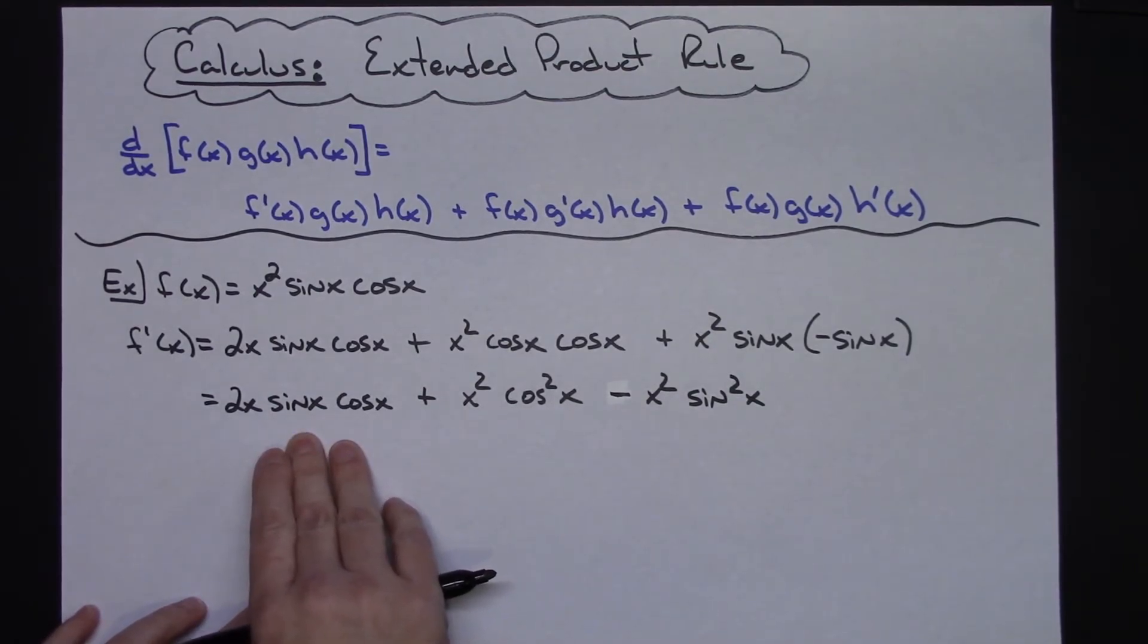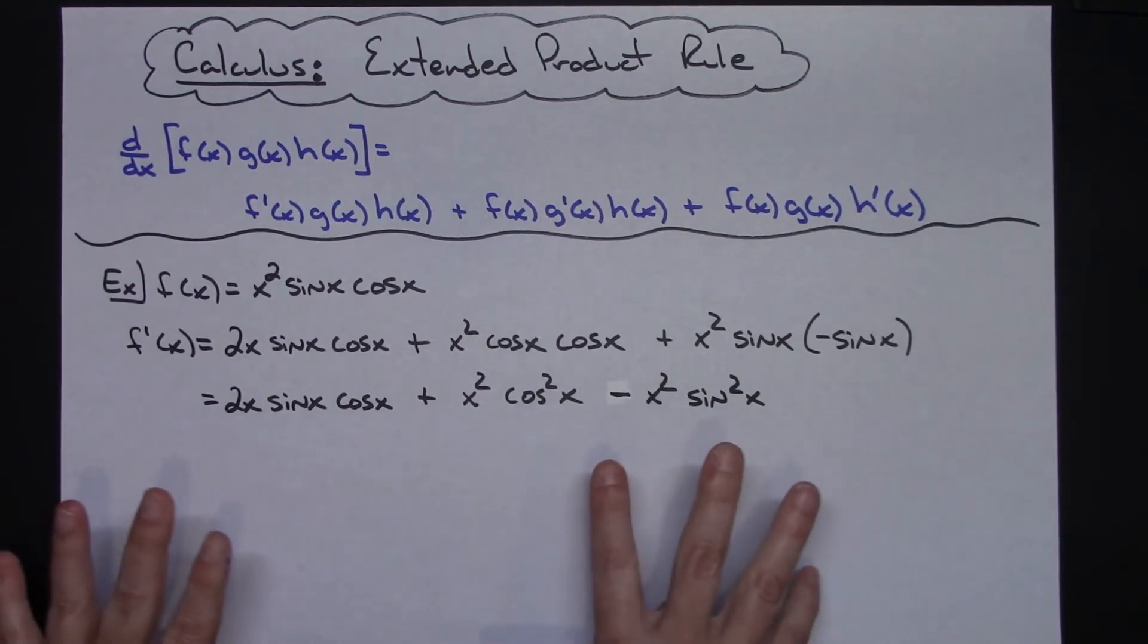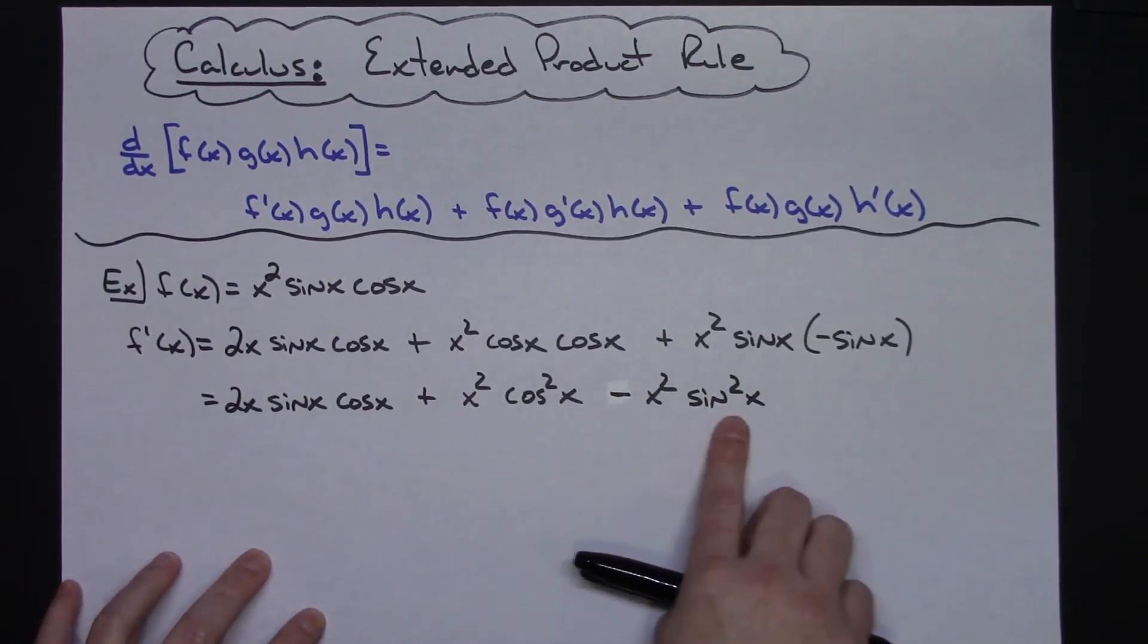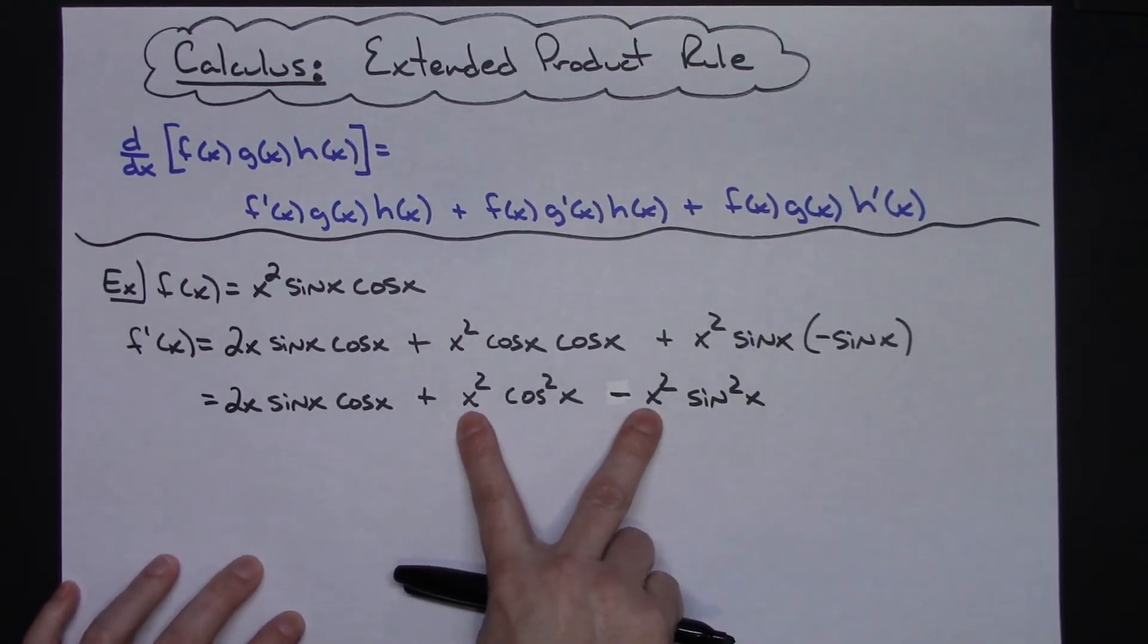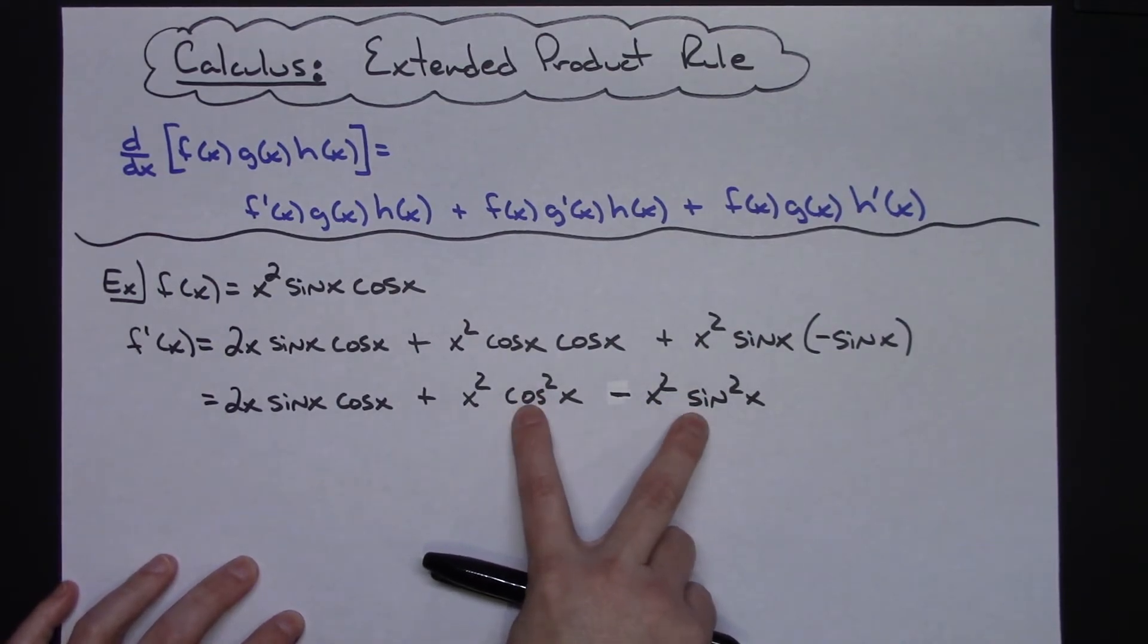At this point I do not have a greatest common factor of anything. I mean I could take an x out but that's not really going to help a lot. So on this I would probably take a look at this and I would probably pull out an x² just from these last two terms, depending on how you are wanting to keep going and simplifying this one.